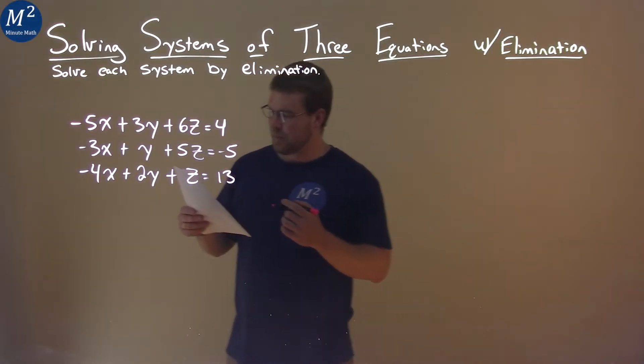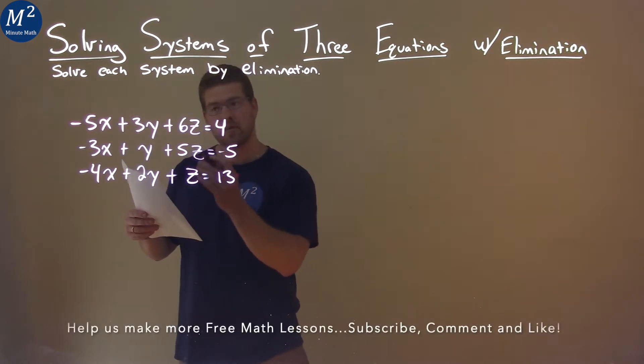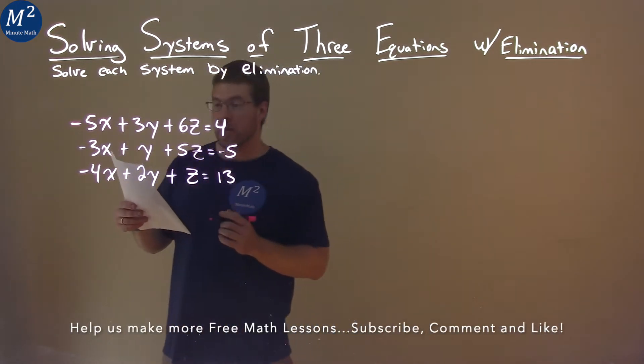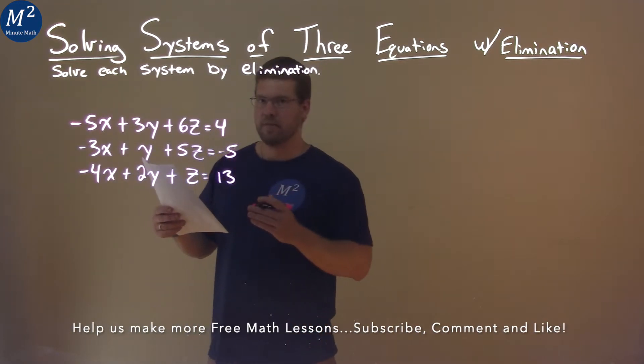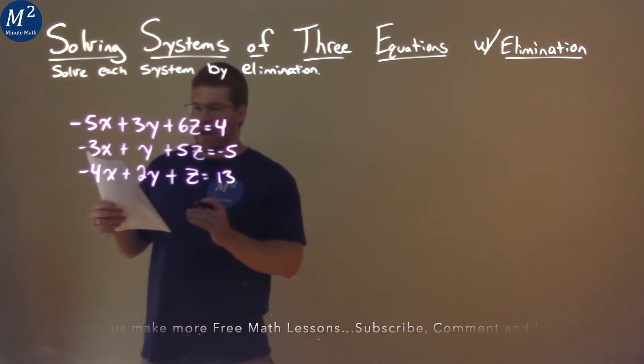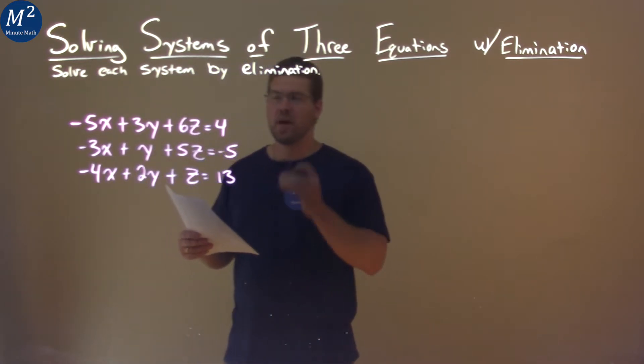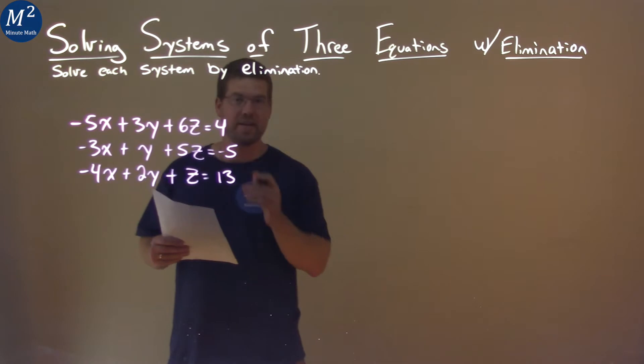We're given this problem right here. Negative 5x plus 3y plus 6z equals 4. Negative 3x plus y plus 5z equals negative 5. Negative 4x plus 2y plus z equals 13. And we need to solve this system by elimination.